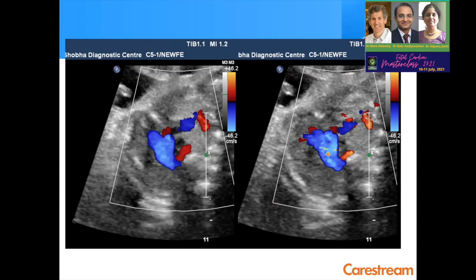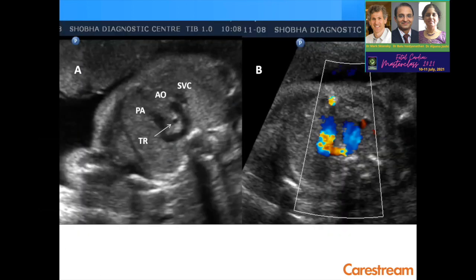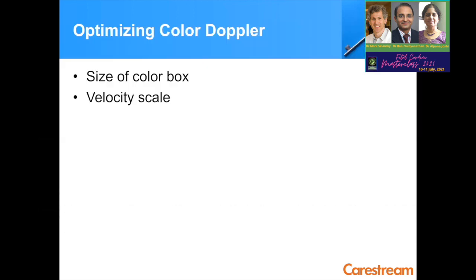There are certain anomalies like ARSA — the aberrant right subclavian artery — or vascular rings, which are better demonstrated on color Doppler. So how do we optimize the color Doppler while doing fetal cardiac assessment? It all depends on the technique and physics of color Doppler.